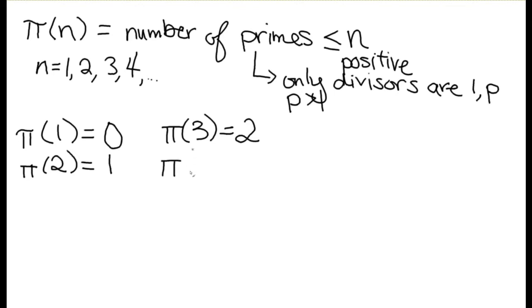Pi of 4, well 1 is not prime, 2 is, 3 is, and 4 is not. So we still only have 2 prime numbers smaller than or equal to 4.